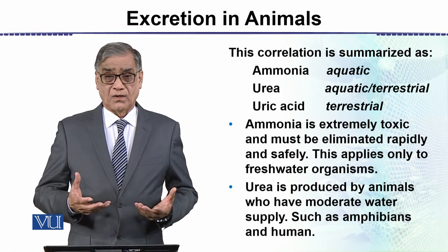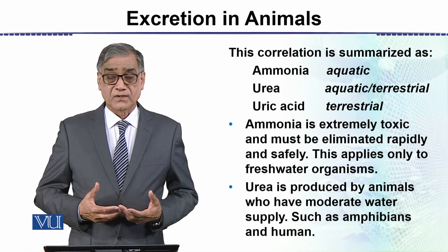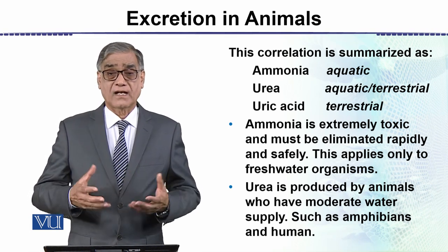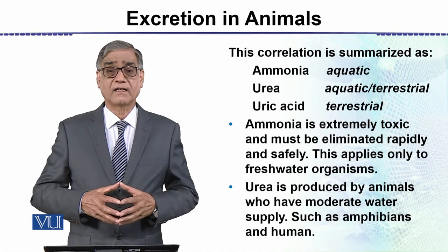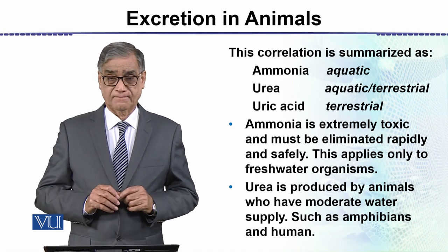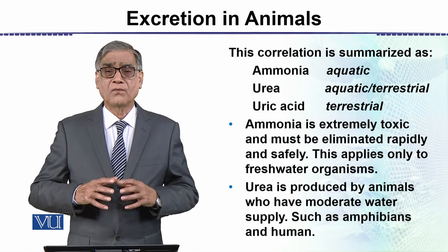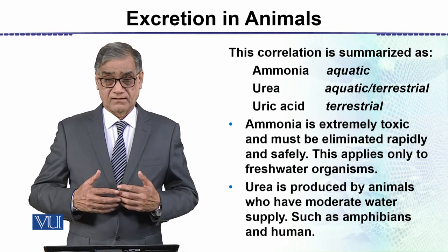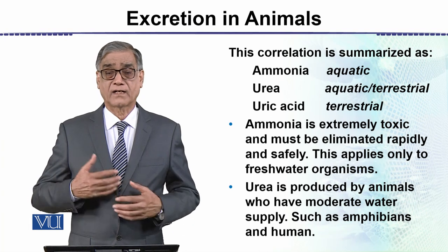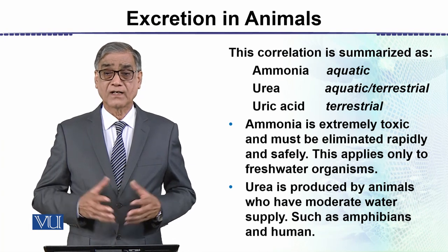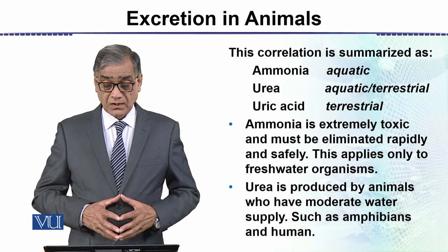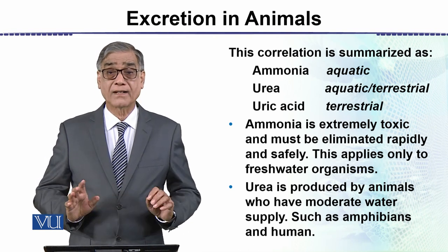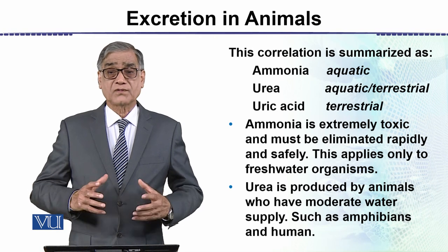Some animals that are terrestrial, such as birds and many desert animals, prefer to synthesize uric acid, because uric acid is even less toxic than urea. Therefore they need very little amount of water for its removal. The type of nitrogenous waste excreted is thus associated with the environment.